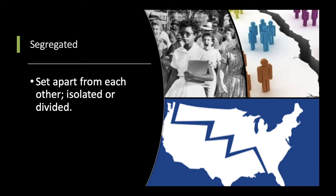Next word is segregated. We talked about Jim Crow laws segregating people, but what does that actually mean? Segregate means to set apart from each other, isolate or divide. These are going to be tough times in the United States, especially the southern United States, because you're going to see a lot of segregation, and it's not going to be great for the country.